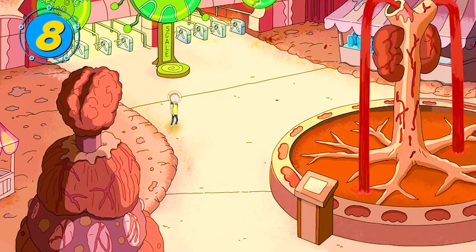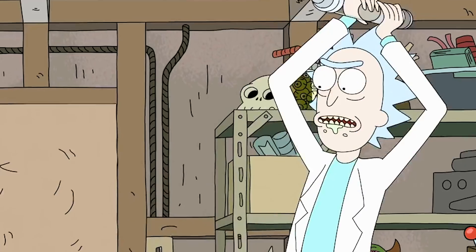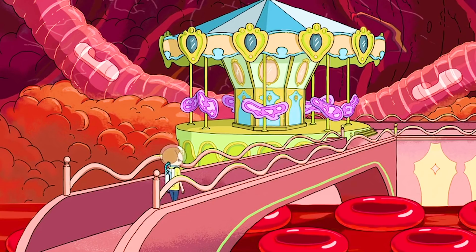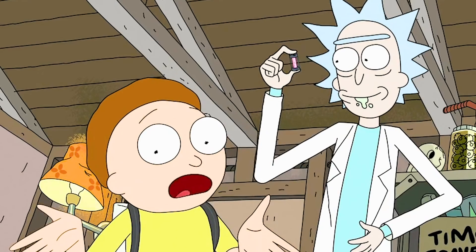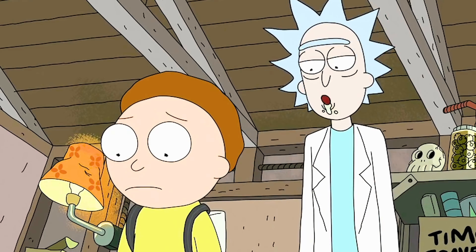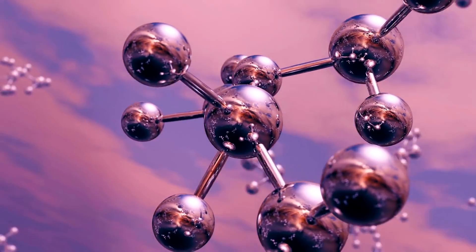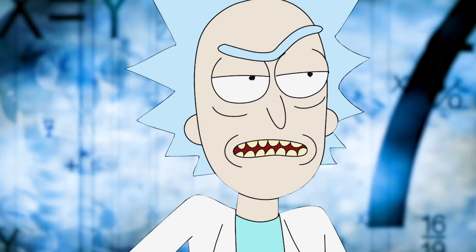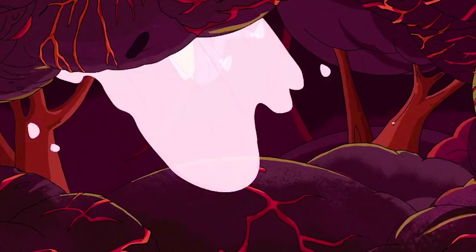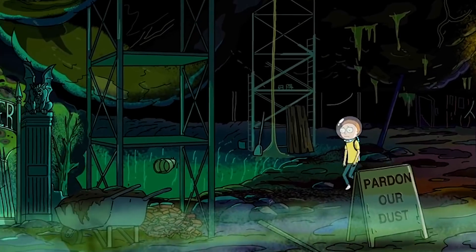Looking back to the episode Anatomy Park, we see Rick utilizing some impressive shrinking technology. He sends a mini Morty into Anatomy Park, and his diminutive grandson is able to function just fine. But there are some very real roadblocks to shrinking technology. To shrink someone, you'd have to either shrink their very atoms or reduce the number of atoms making them up. Shrinking atoms is pretty much impossible, because the distances between protons, neutrons, and electrons are fixed. If Rick somehow managed to get around this, the resulting tiny Morty would just be incredibly dense — so much so that he might sink into the Earth.